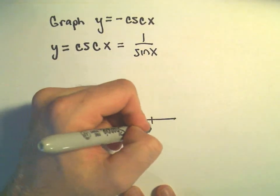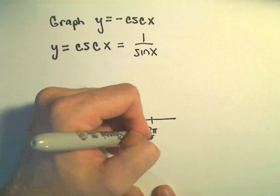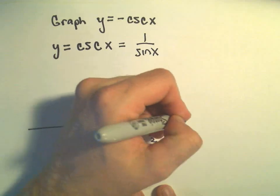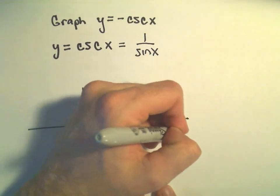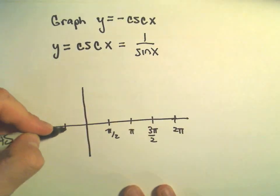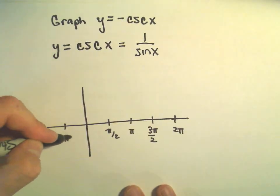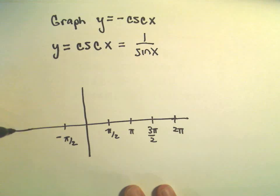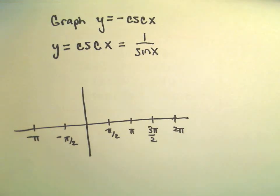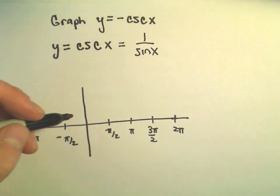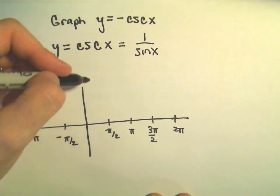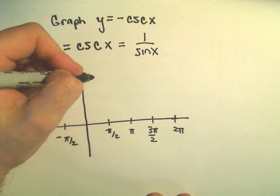So I'll mark pi over 2, pi, 3 pi over 2, 2 pi on the x-axis, and a couple units on the negative side as well: negative pi over 2, negative pi, etc. So I'm going to graph sine x first.